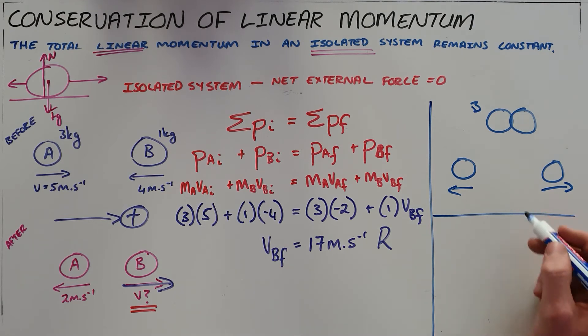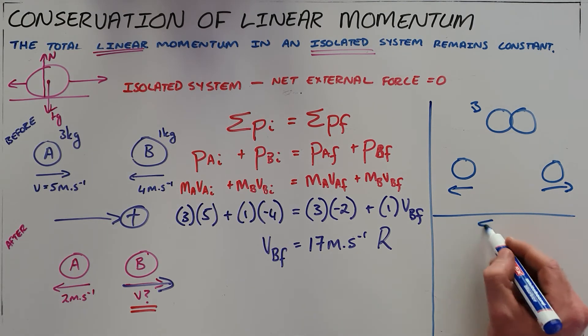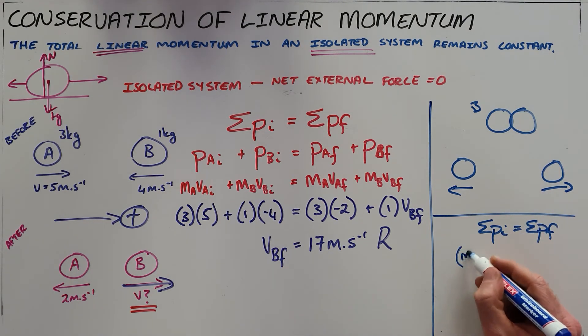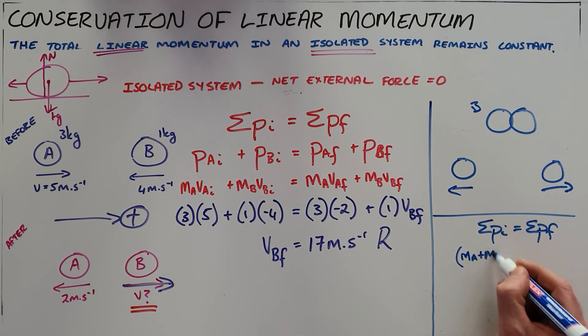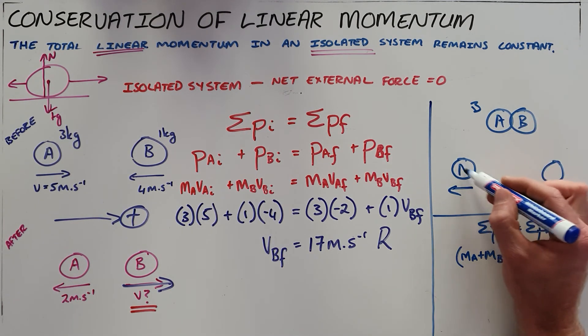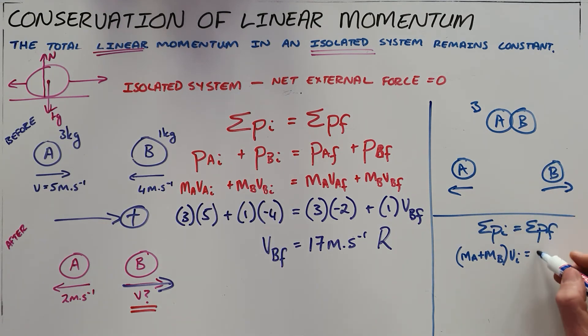What we would do here is we would say once again momentum must be conserved. What that means is that initially, since they are combined, the mass of both objects must be combined because they must have the same velocity. Finally they are then separate, and since they are separate we can now say that is the mass of A multiplied by the final velocity of A plus the mass of B multiplied by the final velocity of B.